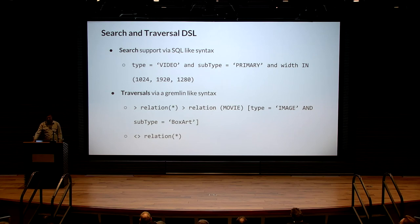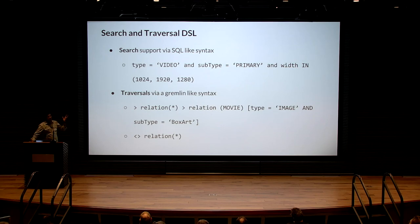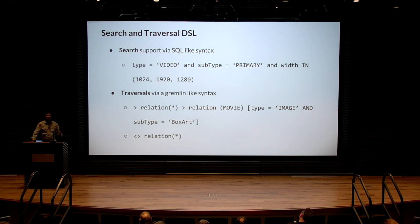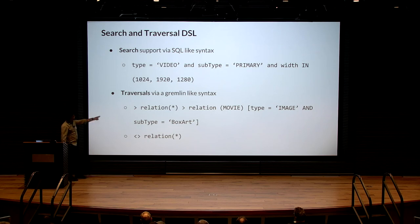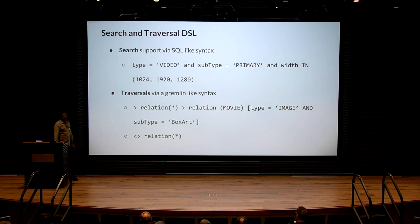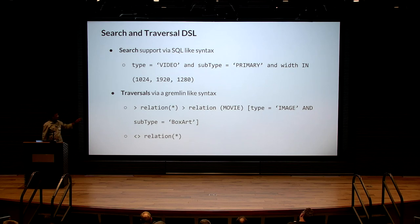We also created our own DSL to simplify search — a SQL-like WHERE clause syntax that maps to Elasticsearch queries, supporting property name, type, IN clause, NOT clause, and similar constructs. We also added our own traversal DSL — like Gremlin but converted internally. The greater-than sign indicates direction and specifies which relation type to follow, allowing you to traverse the graph forward or backward along named relations.